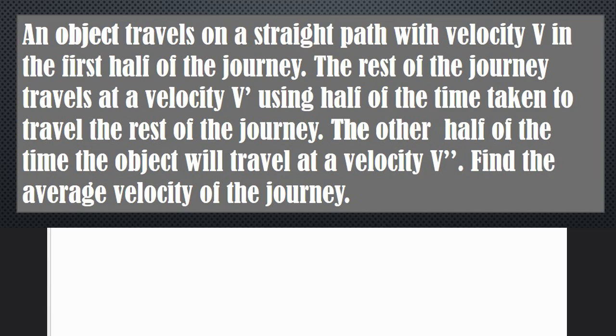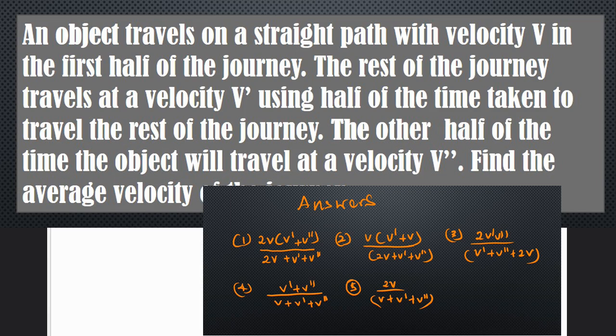This question is a bit of a challenging question. An object travels on a straight path with velocity V in the first half of the journey. The rest of the journey travels at a velocity V' using half of the time taken to travel the rest of the journey. The other half of the time the object will travel at a velocity V''. Find the average velocity of the journey.